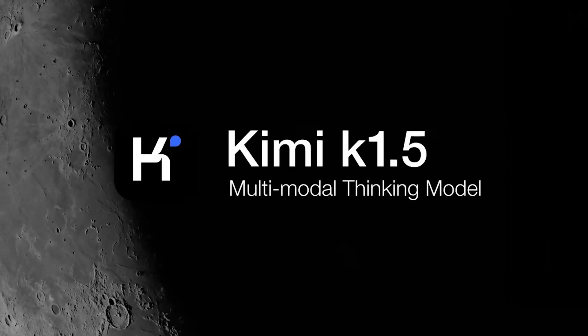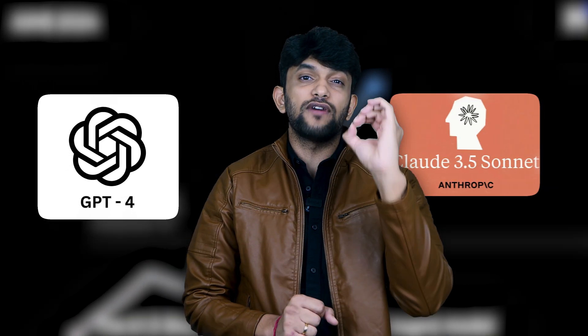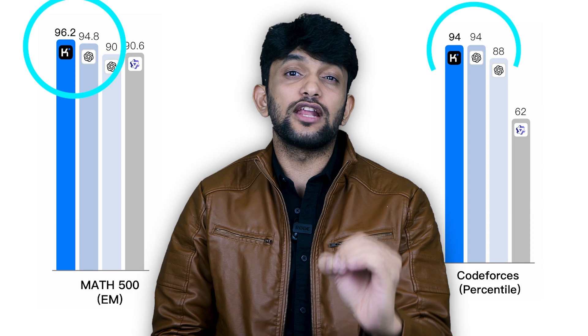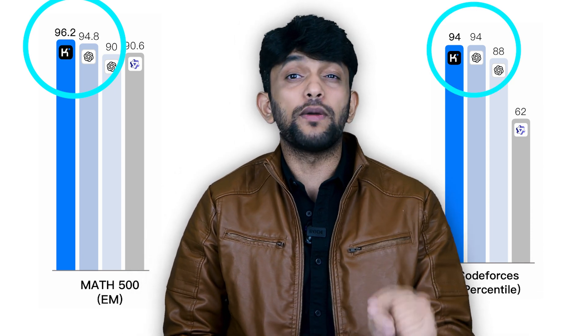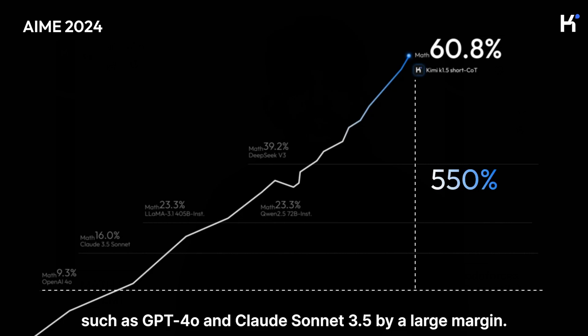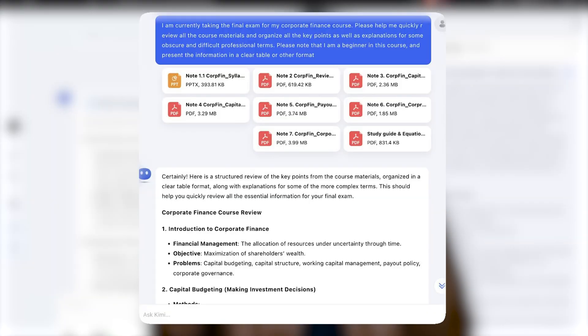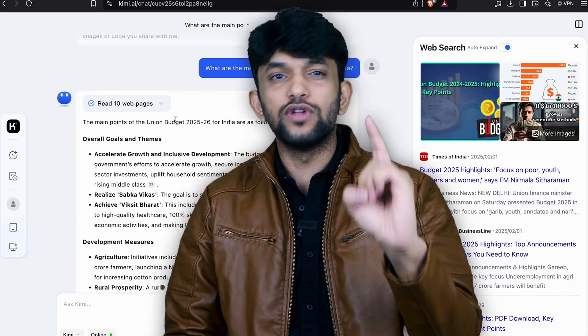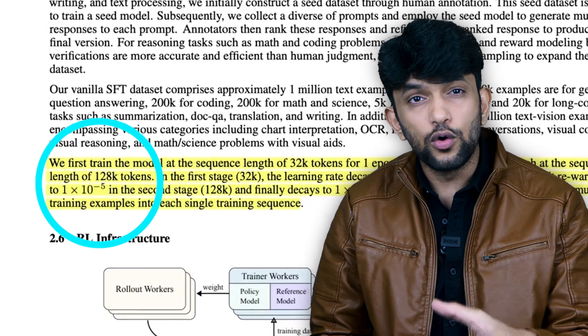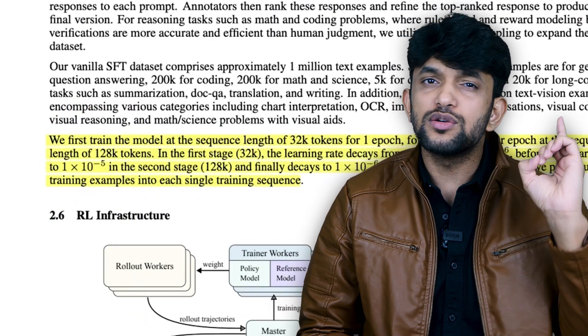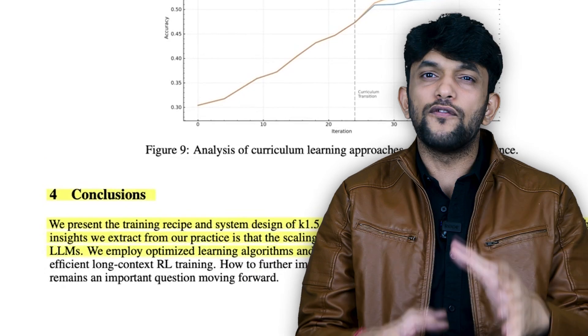China did not stop there. Moonshot AI, one more Chinese company, released their AI model Kimi K1.5. This real-time AI assistant outperformed GPT-4 and Claude 3.5 Sonnet on multiple AI benchmarks. Kimi scored 96.2 on MATH 500, which is higher than GPT-4, achieved the 94th percentile on Codeforces, and outperforms GPT-4 by up to 550% in reasoning and problem solving. Kimi K1.5 is completely free and brings real-time web search, file analysis, and advanced chain-of-thought reasoning. It has a 120K token context window, meaning it can remember and process large amounts of information at once, making it one of the most powerful AI assistants available today.